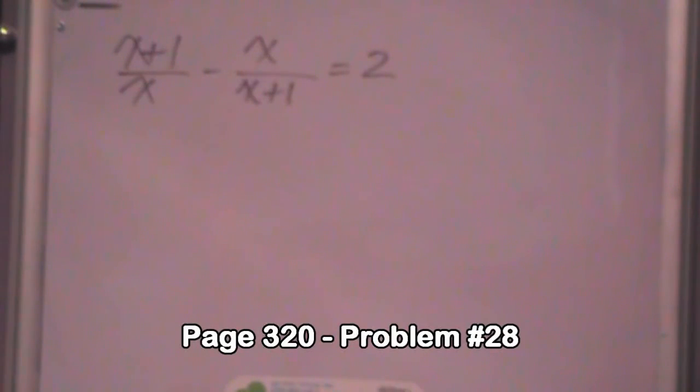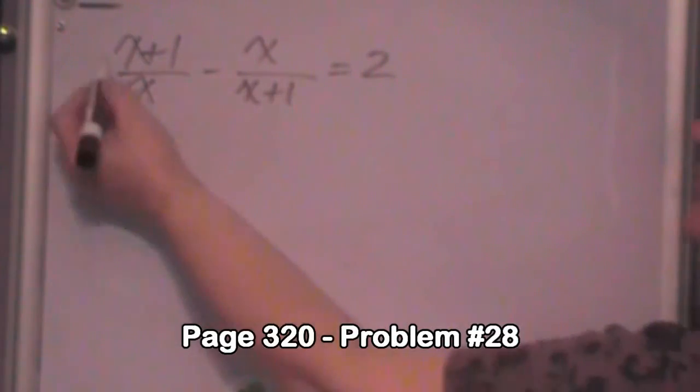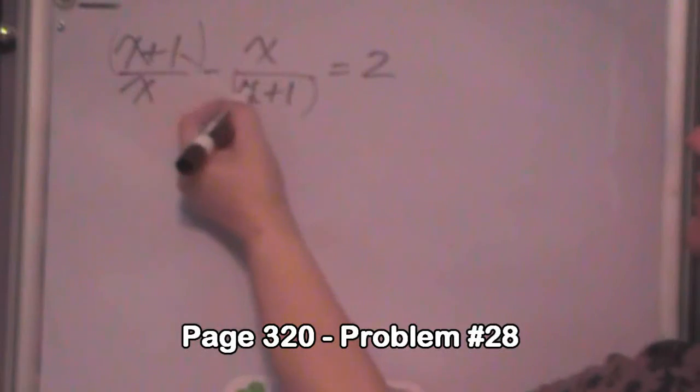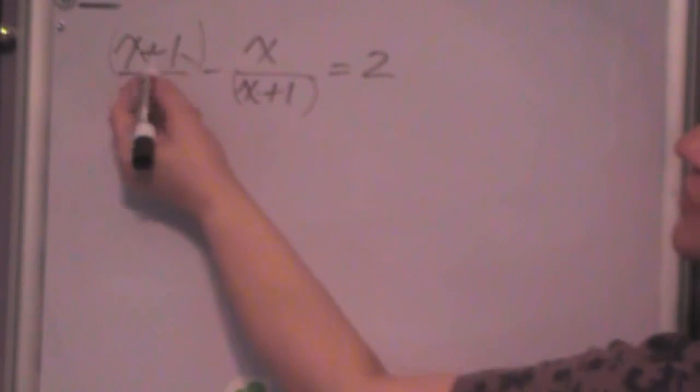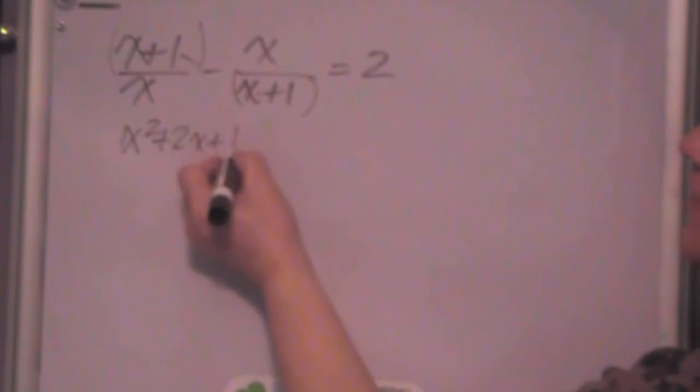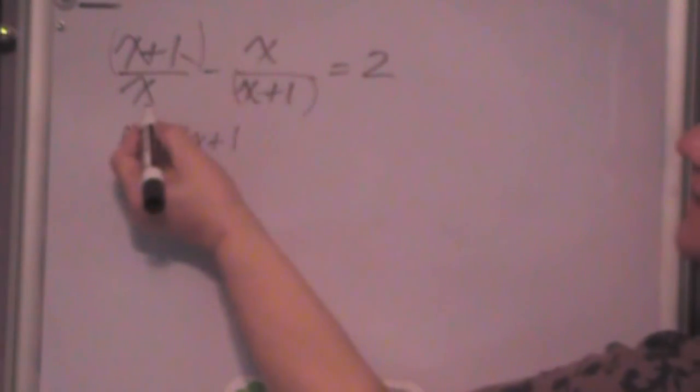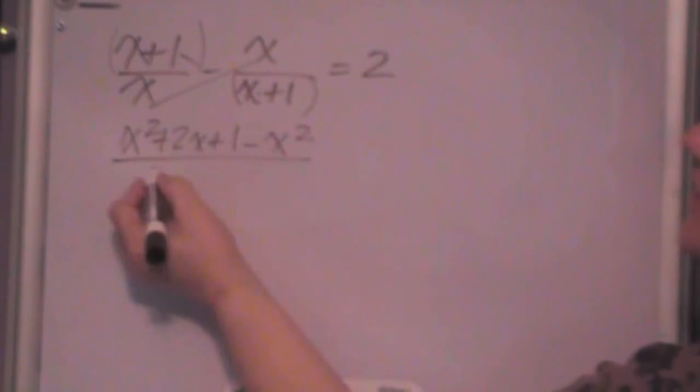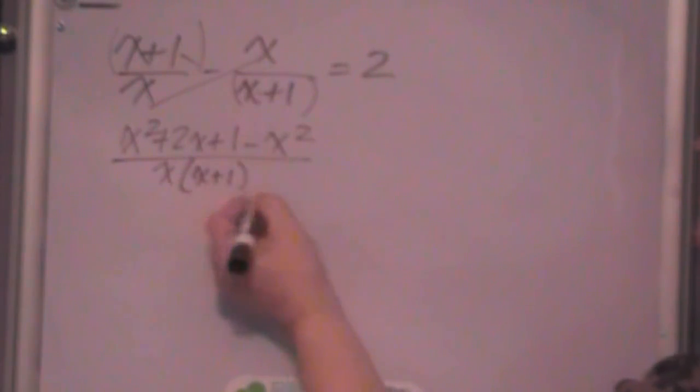Now, on this one, however you choose to get a common denominator to combine those fractions is up to you. What I would do is I would use this, and I would multiply this one times this one, which is this one squared, which I know what that is, x squared plus 2x plus 1, minus x squared, this product, all over x times x plus 1 is equal to 2.